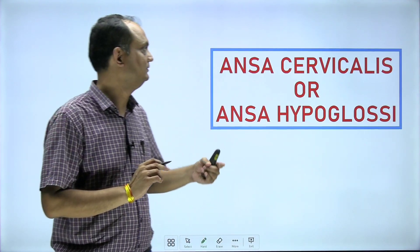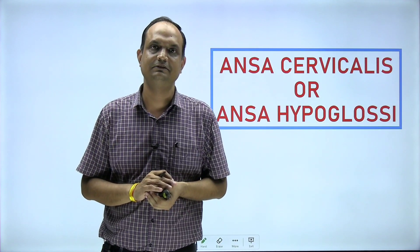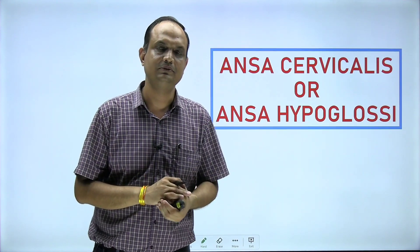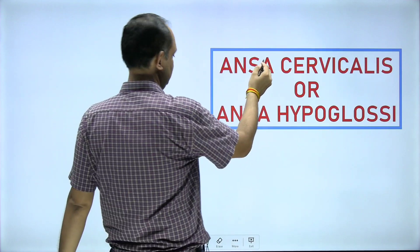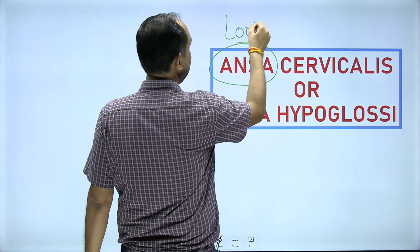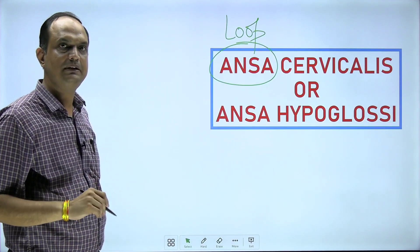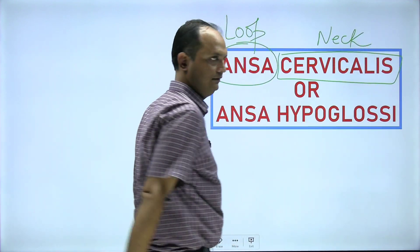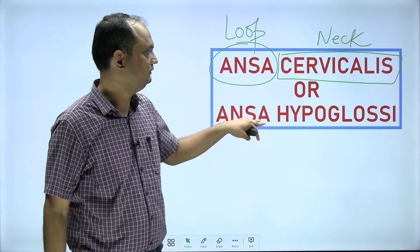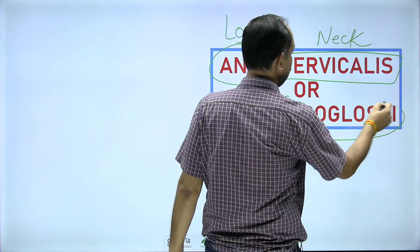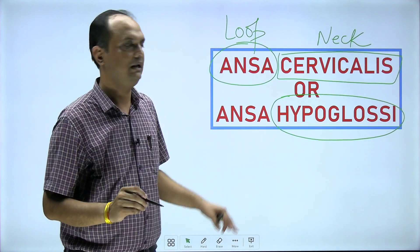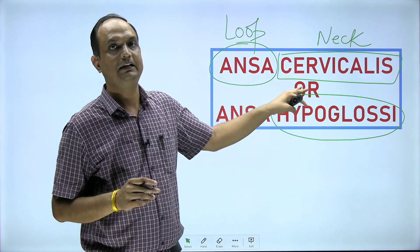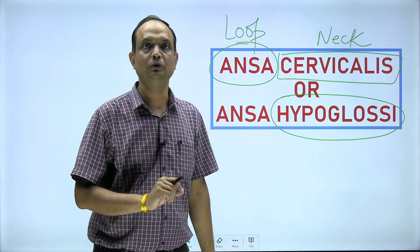Today we will discuss the ansa cervicalis, also known as ansa hypoglossi. This short note is very commonly asked in university exams. The word 'ansa' means loop. Since we are reading 'ansa cervicalis,' this means it is a loop-like structure present in the neck, dealing with the cervical region. It is also called ansa hypoglossi because this loop is related to the hypoglossal nerve, which is the 12th cranial nerve. Importantly, ansa cervicalis is a nerve loop — it is not an arterial loop.